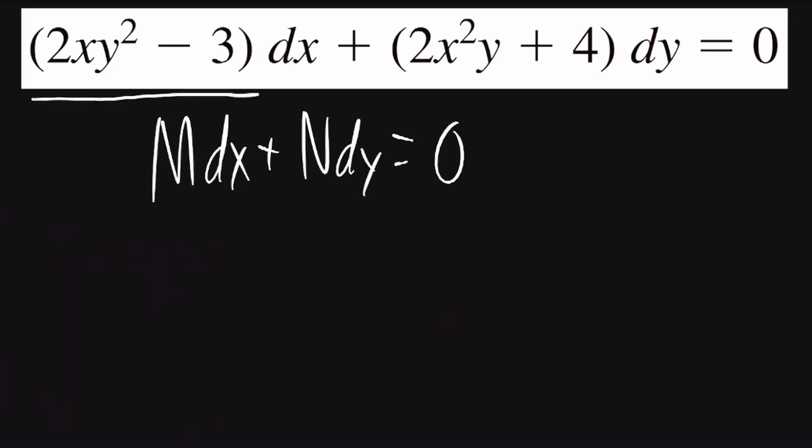The coefficient for dx is going to be m, which in this case is 2xy squared minus 3. And the coefficient for dy is n, which in this case is 2x squared y plus 4.